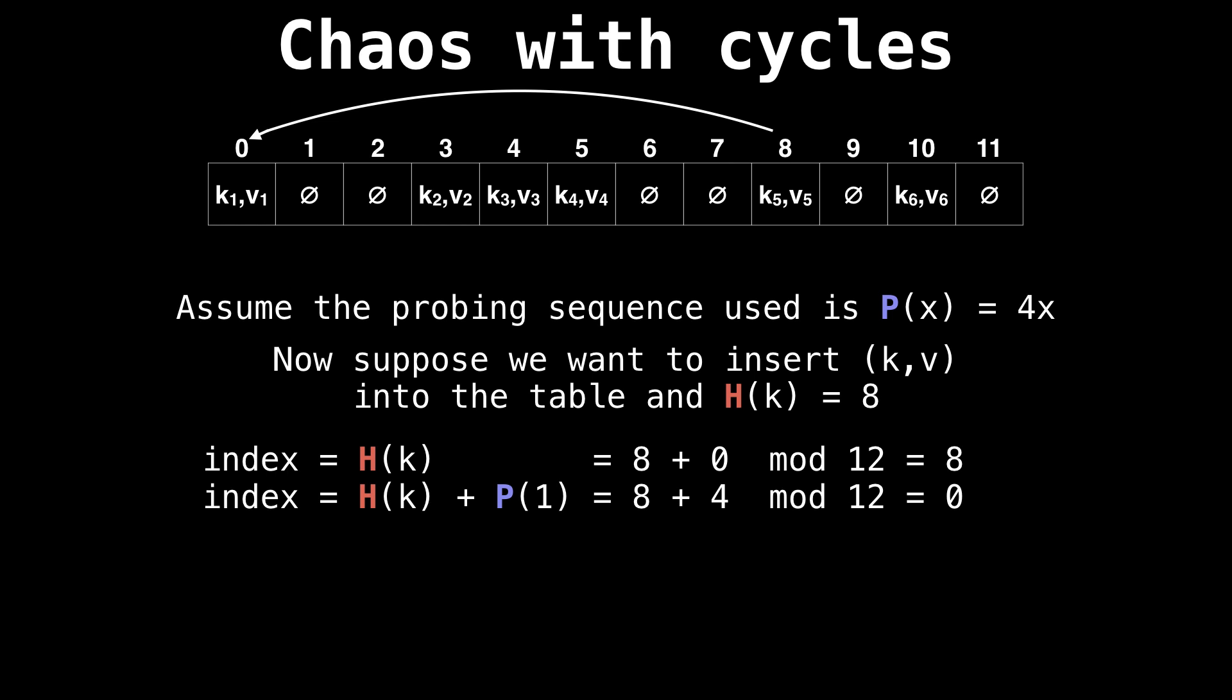We compute P(1), which is 4 times 1. So we get 8 plus 4 mod 12. That's 0. So then we go slot 0 and we see that is also occupied because key 1 and value 1 is already there.